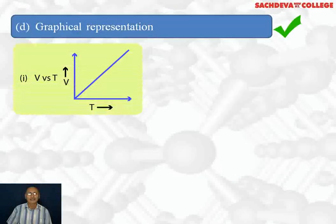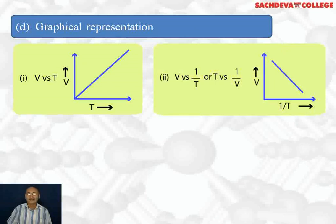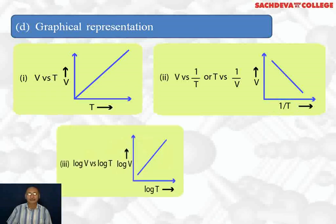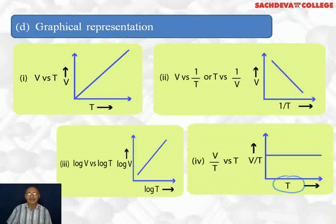Now we are taking the graphical representation for Charles's law. The first graph is plotted between volume and temperature at constant pressure. Since volume and absolute temperature are directly proportional, we get a straight line. The second graph is plotted between volume and 1/T — since they are inversely proportional, the graph curves accordingly. Log V versus log T are also directly proportional, giving a straight line. The fourth graph plots T versus V/T, and V/T remains constant as T varies. All these graphs are called isobars because they are plotted at constant pressure.